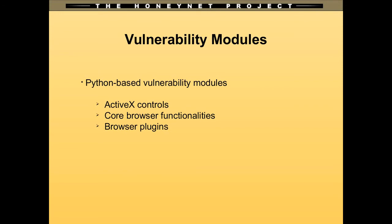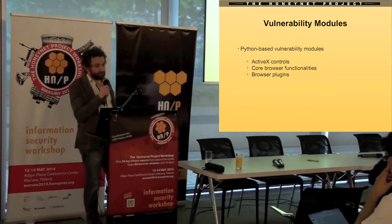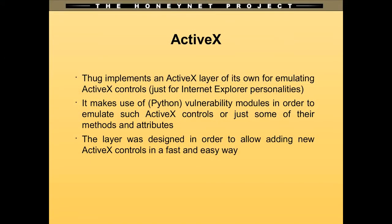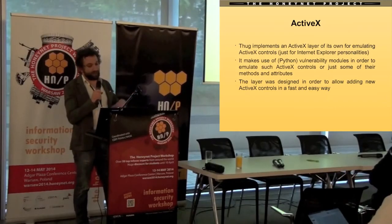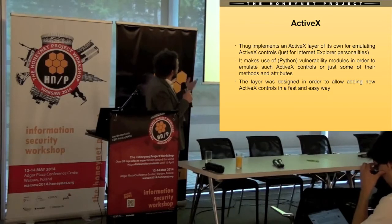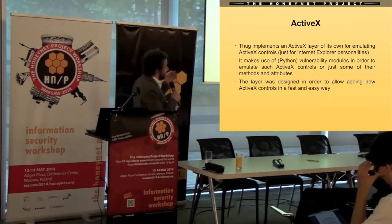TAG uses the same concept as Phonix regarding vulnerability modules — Python-based vulnerability modules. ActiveX controls, core browser functionalities, and browser plugins are all emulated by Python vulnerability modules. TAG implements its own ActiveX layer for emulating ActiveX controls, used only for Internet Explorer personalities, and makes use of vulnerability modules to emulate these ActiveX controls — not all interfaces, just those known to contain vulnerabilities. It is really simple to extend these vulnerability modules; the layer was designed to allow fast and easy extension.